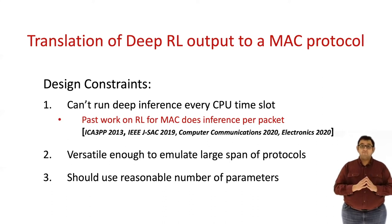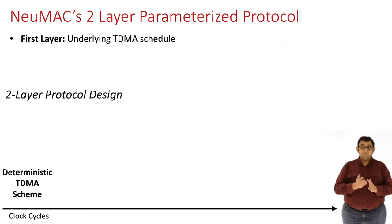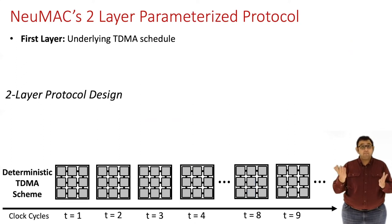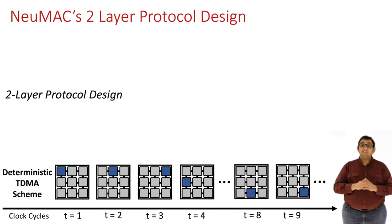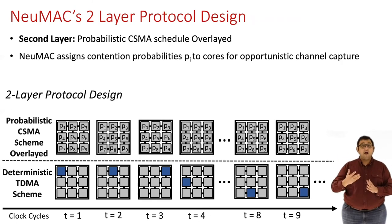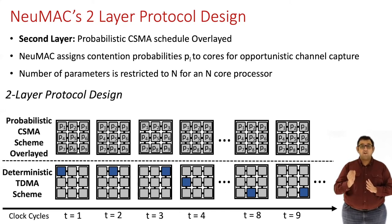With these constraints in mind, we present the design of newMAC's two-layer protocol. The first layer is an underlying TDMA schedule, where each core gets assigned a dedicated time slot periodically. So if a core has an outstanding packet, it will transmit in its allocated slot. Overlaid on top of this is a CSMA schedule, where newMAC assigns a probability P_i to each core, and core i can opportunistically steal someone else's TDMA slot with this probability P_i. The only values that newMAC controls are these P_i probabilities, so our protocol is parametrized with just n values for an n-core processor.